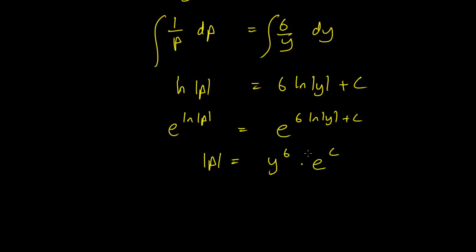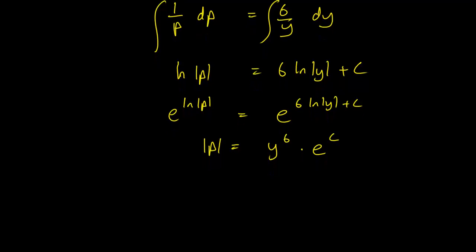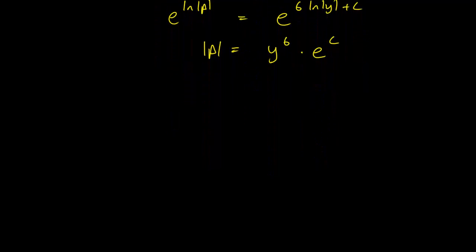Okay, we can drop the absolute values because y^6 is going to be an even power, so this is going to be positive regardless. And we can rewrite this when we take k equals e^c.